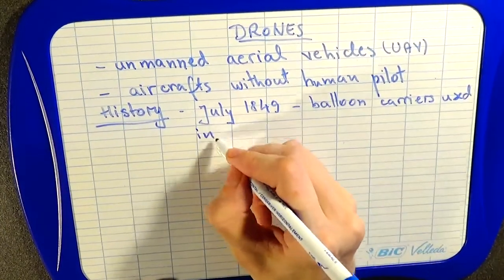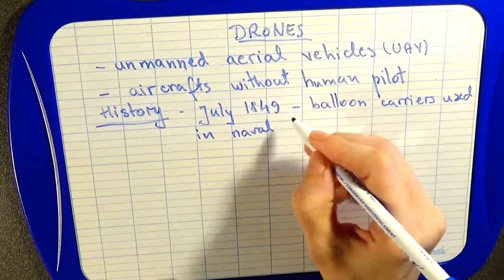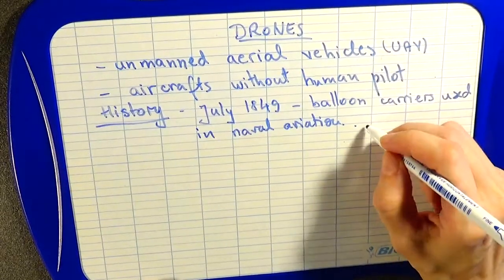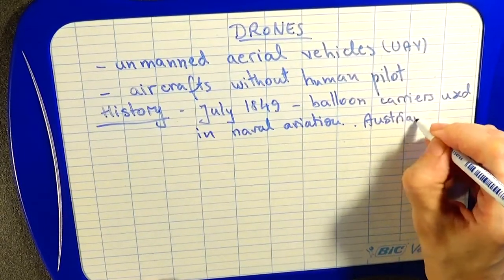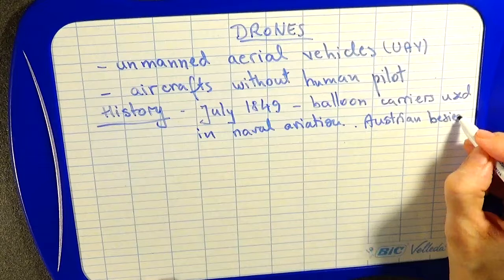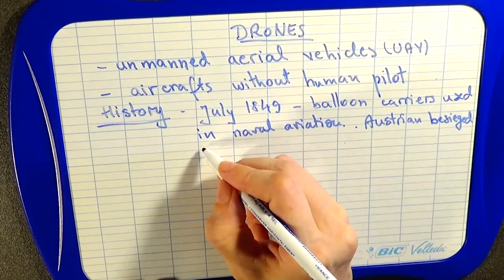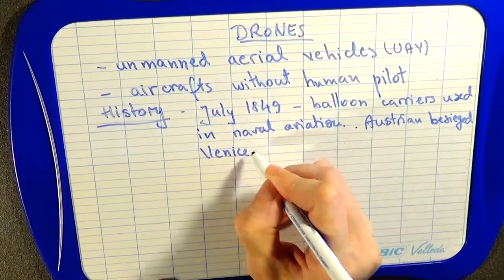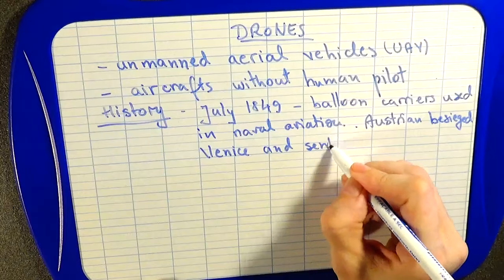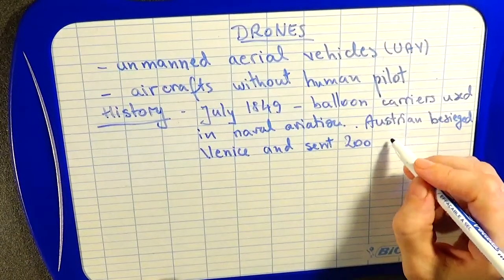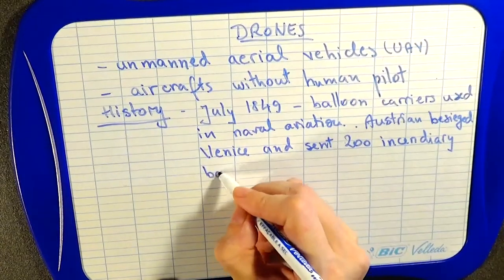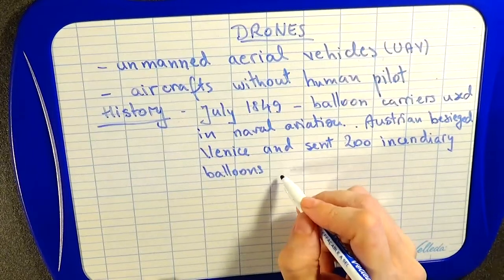In naval aviation, the Austrian forces besieged Venice and sent incendiary balloons into the city.